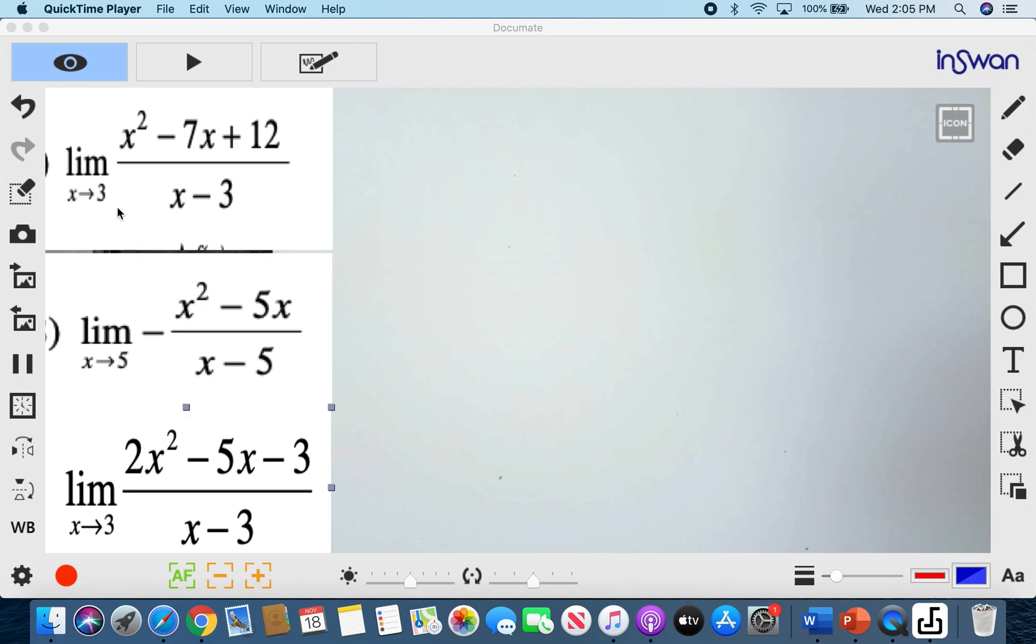The rule here is that you first plug in 3. If you get a constant value, that is already your limit. But if you get an undefined value, that means a number divided by 0, or an indeterminate, that means 0 over 0, it means that you need some work to do, like factoring procedure to cancel out the denominator because you can't afford to have an undefined value here.